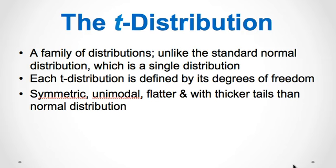Each t-distribution is defined by its degrees of freedom, which are determined by its sample size n minus 1. The characteristics of the t-distribution are as follows: it is unimodal and symmetric around its mean. It has a population mean mu equal to 0, and a population standard deviation sigma greater than 0. However, remember that as degrees of freedom approaches infinity, population standard deviation sigma is equal to 1, like the standard normal distribution. The value of the t-statistic ranges from negative infinity to positive infinity. It is bell-shaped; however, its shape depends on sample size n. As sample size increases, the shape approaches the shape of the standard normal, or z-distribution.